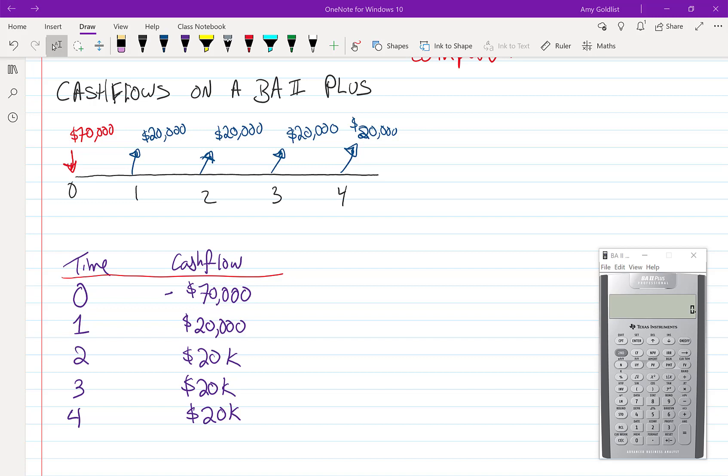I've gone ahead and copied over both our timeline and our balance sheet, all of our cash flows. One thing I'm going to note is I'm going to make use of the fact that this happens four times. We have four different $20,000 cash flows.